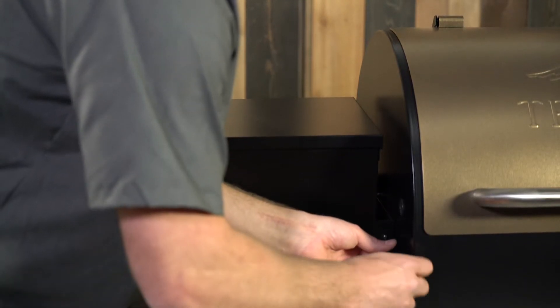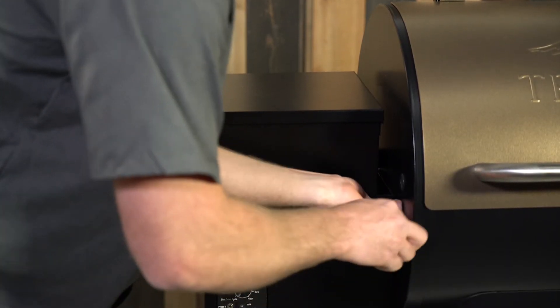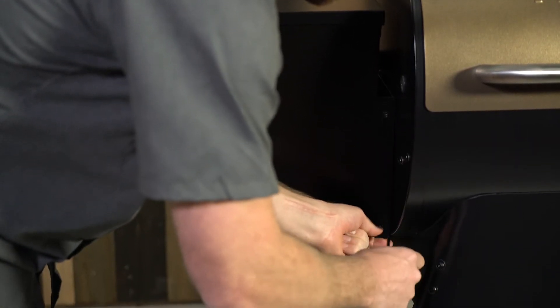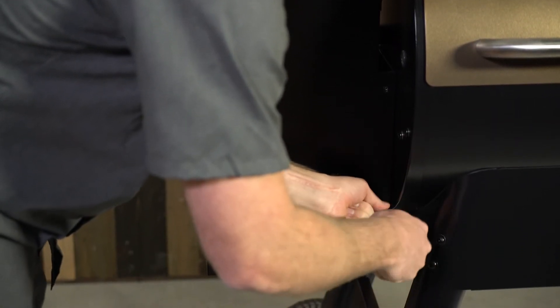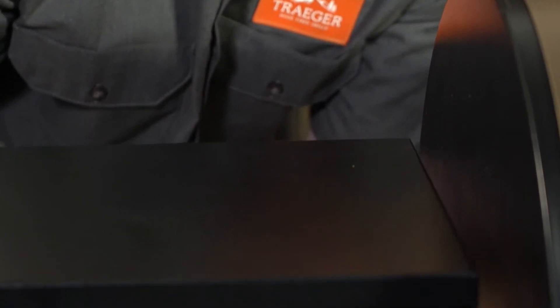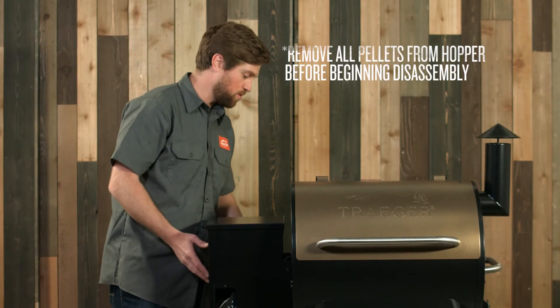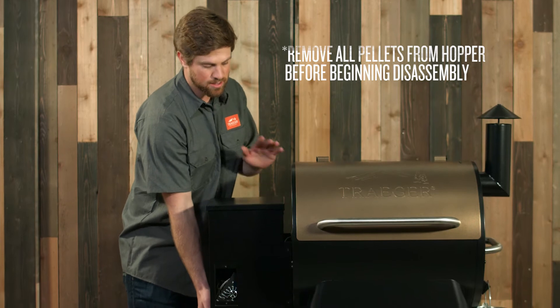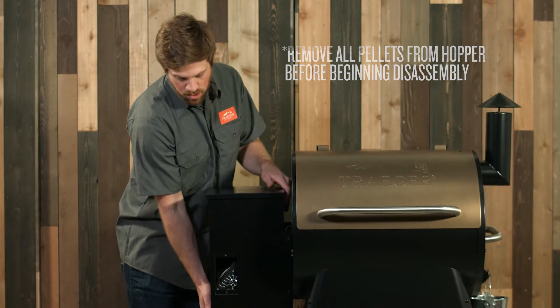The next thing we want to do is take off the hopper from the grill. It's mounted to the side of the grill with four screws, two in the front and two in the back. When you remove that last screw, make sure you have a hand on here just in case this hopper wants to fall off.